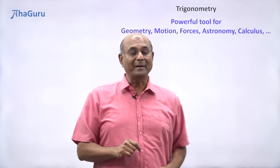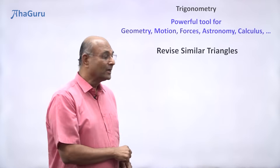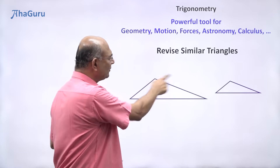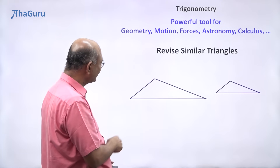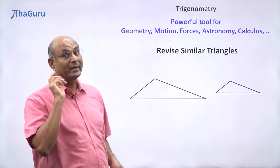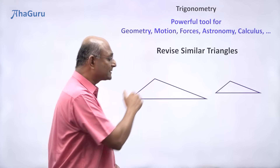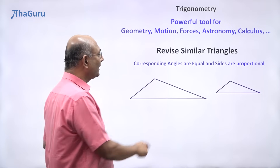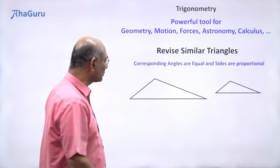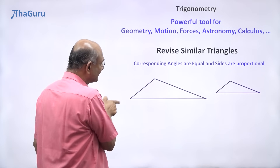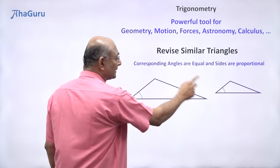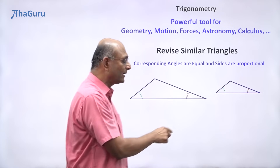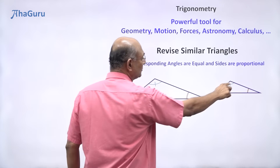The basis of trigonometry is similar triangles. So let me quickly revise the concept of similar triangles. Just by looking at these two triangles, you can see that these two are similar. But looking is not enough. What makes them similar? Their corresponding angles must be equal and their sides must be proportional. If I look at this angle and that angle, they must be equal.